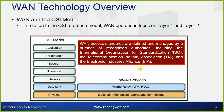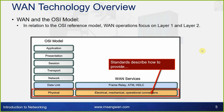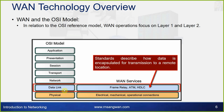WAN access standards are defined and managed by recognized authorities including the International Organization for Standardization (ISO), the Telecommunications Industry Association (TIA), and the Electronics Industries Alliance (EIA). Physical layer standards describe how to provide WAN services, while Layer 2 standards describe how data is encapsulated for transmission to a remote location.